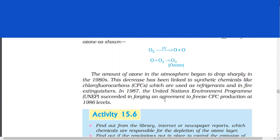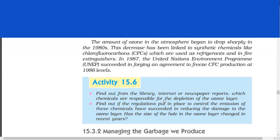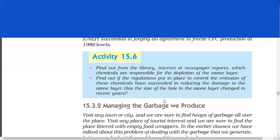The amount of ozone in the atmosphere began to drop sharply in the 1980s. This decrease has been linked to synthetic chemicals like chlorofluorocarbons, which are used as refrigerants and in fire extinguishers. In 1987, the United Nations Environment Programme succeeded in forging an agreement to freeze CFC production at 1986 levels.